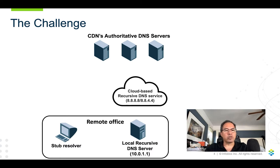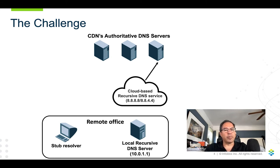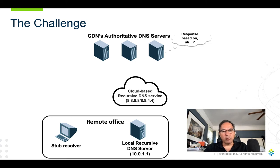Here's a diagram that shows the way that works. We have a remote office down at the bottom, a stub resolver querying a local recursive name server at 10.0.1.1, and it's forwarding up to this cloud-based recursive DNS service. So the stub resolver sends a query, the local recursive DNS server forwards that to the cloud-based recursive DNS service, and now the cloud-based recursive DNS service is going to query one of those authoritative DNS servers along the top on our behalf. But now the authoritative DNS server needs to make a response — which IP address to respond with — based on the source IP address it received, which is just an IP address owned by the recursive DNS service, not necessarily related to the local recursive DNS server.